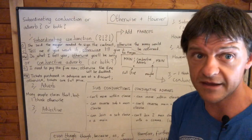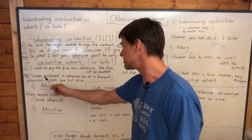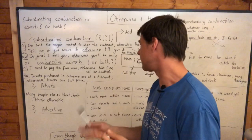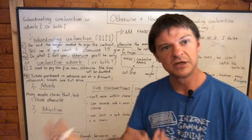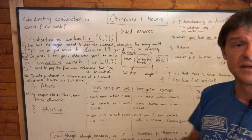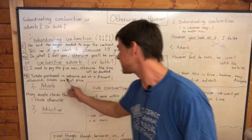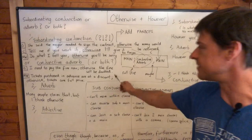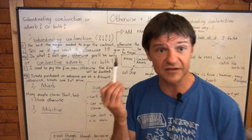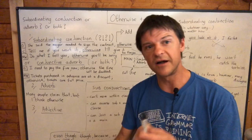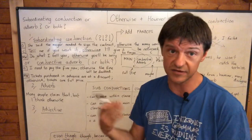But you can see 'otherwise' punctuated correctly as a conjunctive adverb: 'I need to pay the fine now; otherwise the fine will be doubled.' The comma after the conjunctive adverb is optional — it's acting as a sentence adverb modifying the following clause, and many people choose to comma off their sentence adverbs. Another example: 'tickets purchased in advance without a discount; otherwise, tickets are full price.' Both examples are from the dictionary. So dictionaries do understand that 'otherwise' functions as a conjunctive adverb, but I find it odd that they also claim it can be punctuated as a subordinating conjunction.